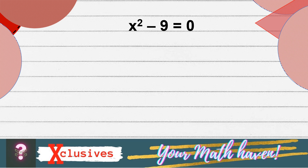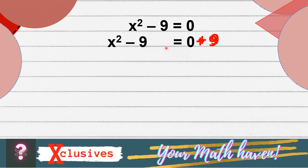Now, let us solve for the roots of x squared minus 9 is equal to 0. To perform extracting the roots, we are going to transpose negative 9 to this side. To do that, we need to think of a number that if we are going to add to negative 9, the result will be 0. So, we are going to add both sides by positive 9 and likewise to the other side. It is because negative 9 plus 9 will be 0, and the remaining term is x squared is equal to 0 plus 9, that is 9.